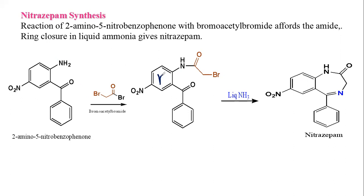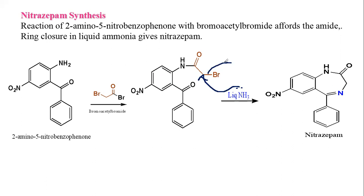When Structure 2 reacts with liquid ammonia, ring closure occurs. Ring A and ring C are already present; ring B is open and gets closed in the presence of liquid ammonia. The reaction involves the bromoacetyl moiety — Br is eliminated as HBr, and a water molecule is also eliminated.